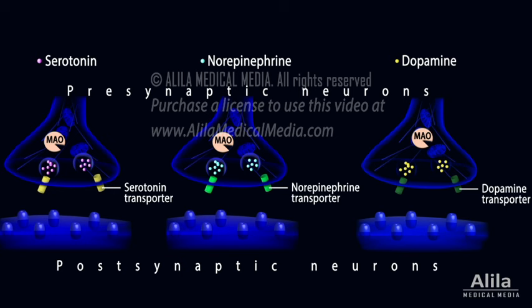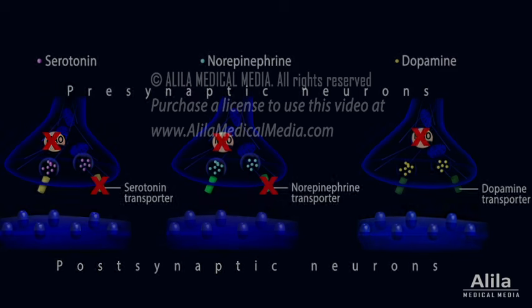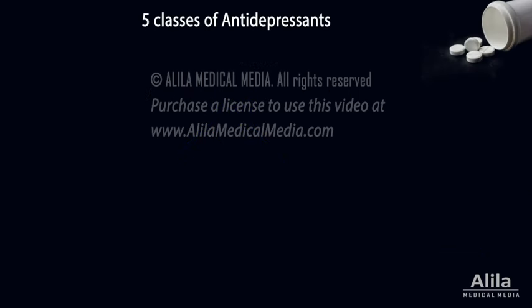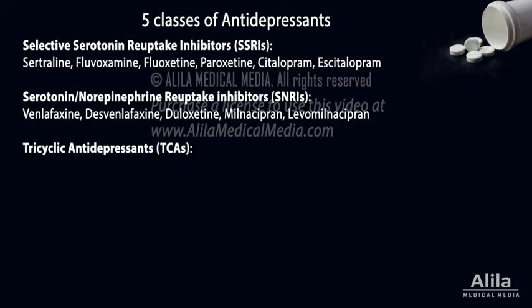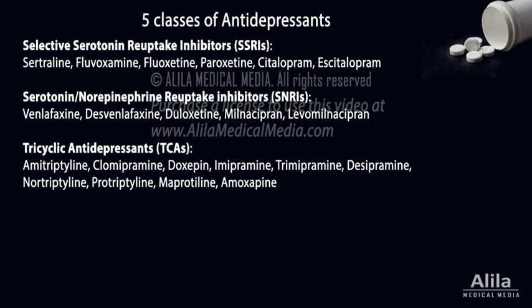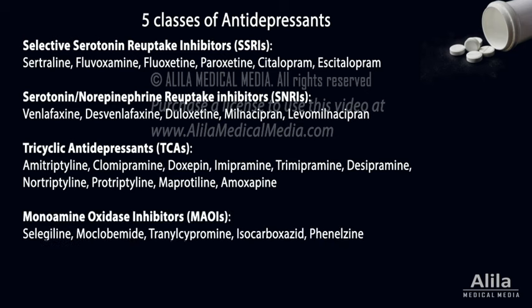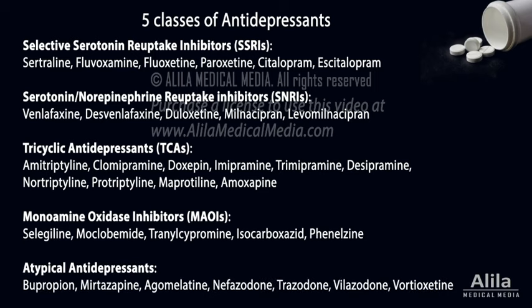Most antidepressants act to inhibit the reuptake of monoamines or inhibit their degradation by MAO. There are five classes of antidepressants: selective serotonin reuptake inhibitors (SSRIs), serotonin norepinephrine reuptake inhibitors (SNRIs), tricyclic antidepressants (TCAs), monoamine oxidase inhibitors (MAOIs), and atypical antidepressants.